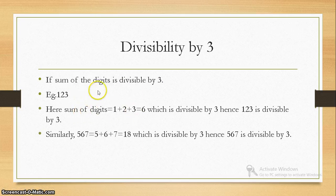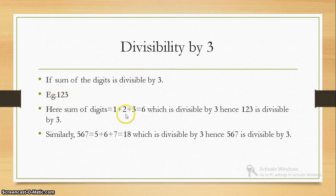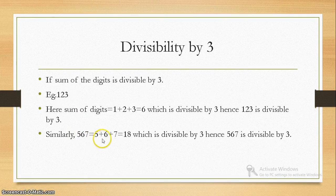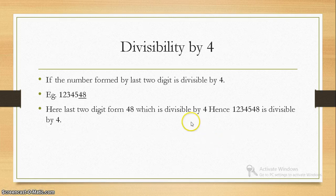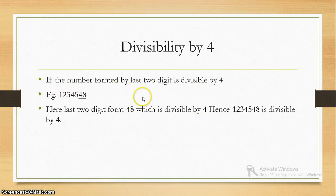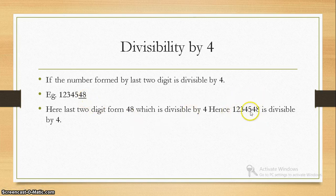Divisibility by 3: if the sum of the digits is divisible by 3, then the number is divisible by 3. For example, 123: the sum 1 + 2 + 3 = 6, which is divisible by 3, hence 123 is divisible by 3. Another example: 567 — 5 + 6 + 7 = 18, which is divisible by 3, hence 567 is divisible by 3. Divisibility by 4: if the number formed by the last two digits is divisible by 4, then the whole number is divisible by 4. Here the last two digits are 48, and 48 is divisible by 4, hence the whole number is divisible by 4.